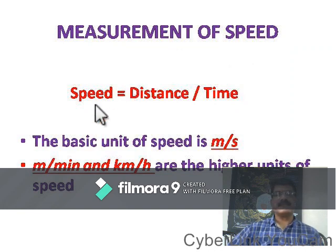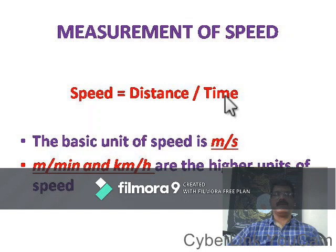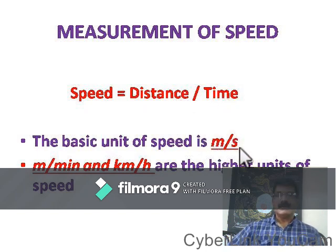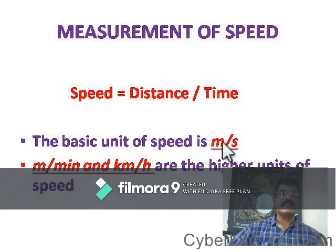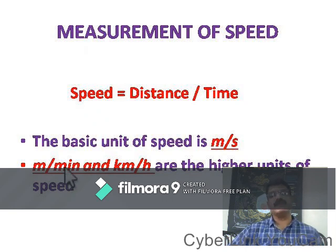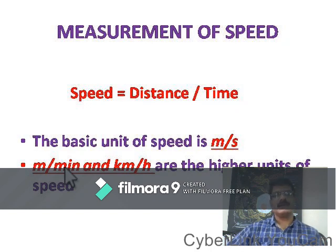Speed can be measured by knowing the distance and time. Speed is equal to distance divided by time. Distance has the smaller unit of meter and time has the smaller unit of second, so speed is written as meter per second (m/s). Higher units of speed are meter per minute, or kilometer per hour for larger journeys.